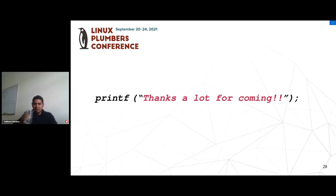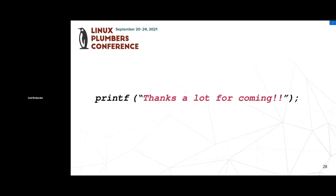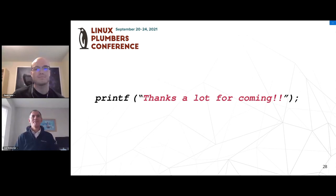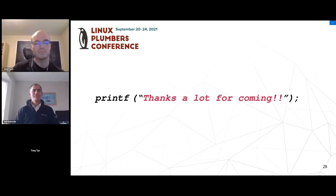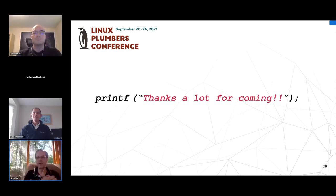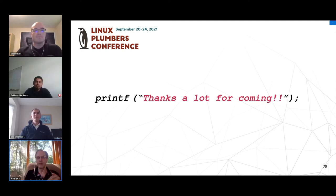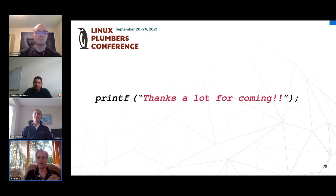Question from Tony: how are the references done for the relocations? It looked like in the example there were some numbers — if it's the fifth declaration, what happens if declarations are added above it in a new kernel version? And what if the semantics have changed — how is that captured for the CO-RE relocations?